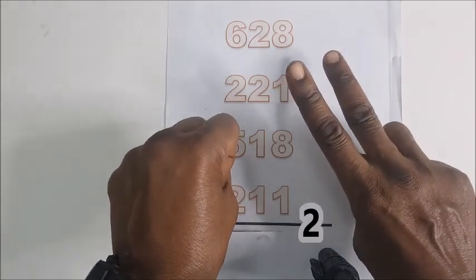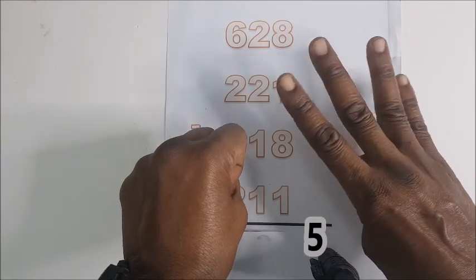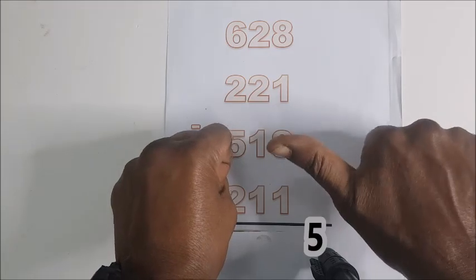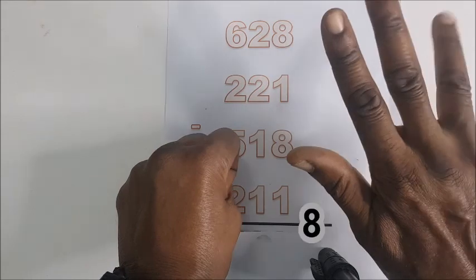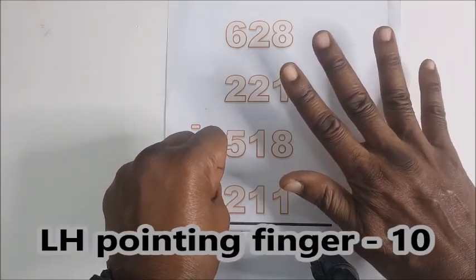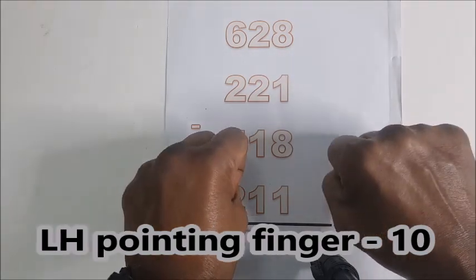So the pointing finger is one, you have two, three, four. Then the most important thing: you fold the four and then shoot up the thumb, which is five, six, seven, eight, nine. That means the single digit is finished.